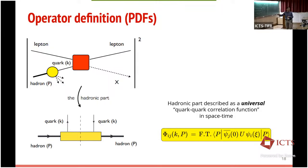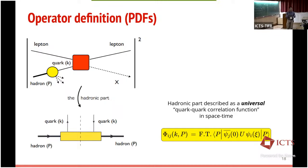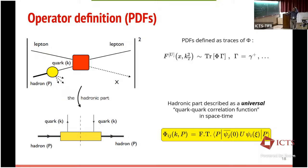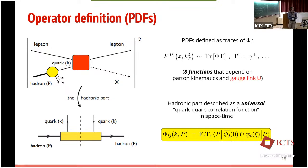This is a matrix in Dirac space — something we cannot calculate in perturbation theory, but we know it is a Dirac matrix. One way to get information on this object is to expand it on the basis of Dirac matrices, and the coefficients of this expansion are related to the parton distribution functions. You don't know how to calculate it, but you know the basis for the space of Dirac matrices. Once you describe this object as a Dirac matrix, you can get the expansion coefficients as traces, and the PDFs are linked to these traces.